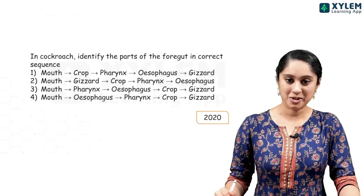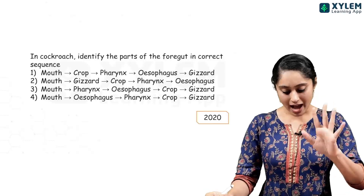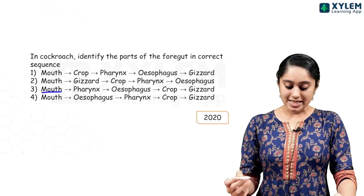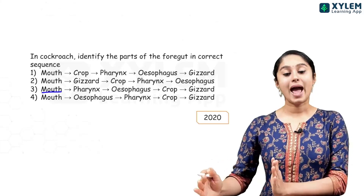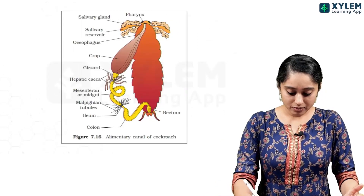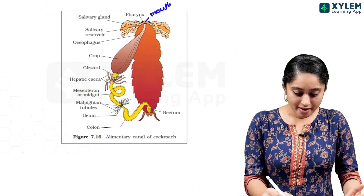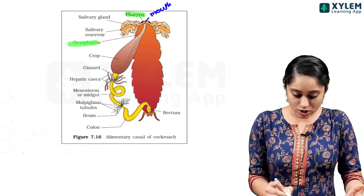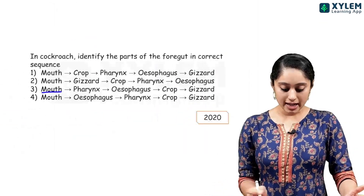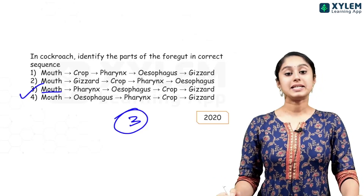In the cockroach digestive system, starting from the mouth, the sequence is: mouth → pharynx → esophagus → crop → gizzard. This matches the diagram of the cockroach gut. So option 3 — mouth, pharynx, esophagus, crop, and gizzard — will be the right answer.